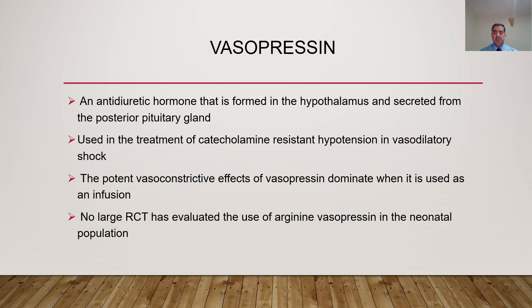Vasopressin is an antidiuretic hormone found in the hypothalamus and secreted from the posterior pituitary gland. It is used in the treatment of catecholamine-resistant hypotension in vasodilatory shock. Its potent vasoconstrictive effects dominate when used as an infusion. No large RCTs have evaluated arginine vasopressin in the neonatal population, so its use is not common in the NICU — it is reserved for experts or within the context of research.